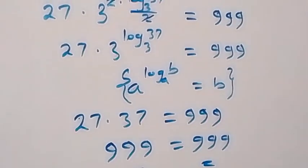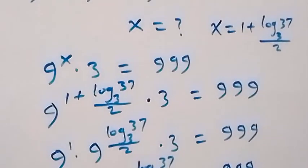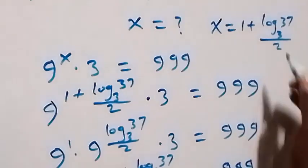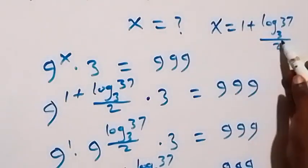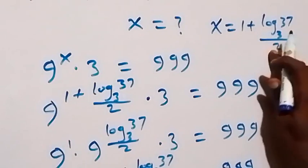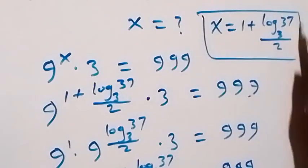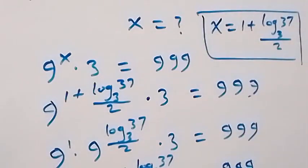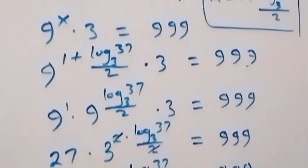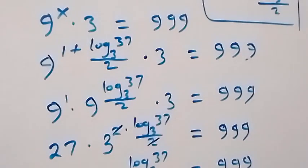Hence we can confirm the value of x we obtained satisfies the given problem, which is x equals 1 plus log₃(37) over 2. Thank you for watching — please subscribe, turn on the notification bell, share this video, give it a thumbs up, and leave any comments in the comment section. See you next class, bye for now.